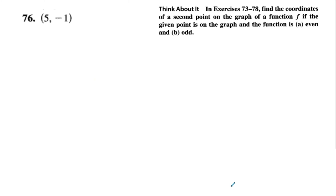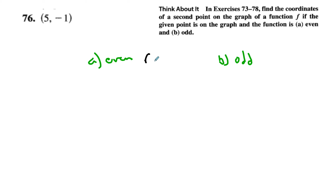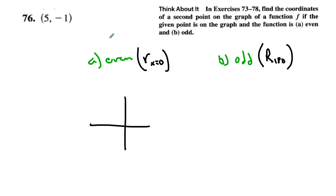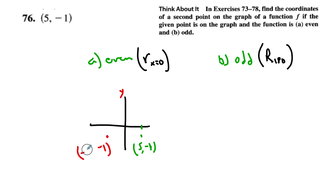Given a point (5, negative 1) on a graph, find another point if the function is even or odd. Even functions show reflection symmetry about the y-axis (x = 0). If we reflect (5, negative 1) over the y-axis, the y value stays negative 1, but x becomes negative 5. So if the function were even, the point (negative 5, negative 1) would also be on the graph.